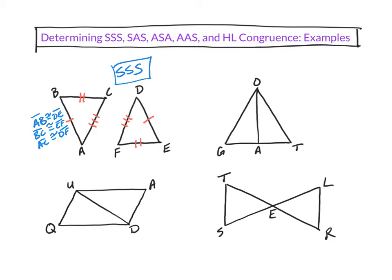Sometimes they do ask for the triangle congruence statement, so you'd say triangle ABC is congruent to triangle DEF. When you write that, you want to do it in the right order — since you'd rotate this around, A and D would line up, B and E would line up, and C and F would line up. But for the most part, all I really want to do today is look at it and say: is it Side-Side-Side, Side-Angle-Side — which congruence theorem would we use?